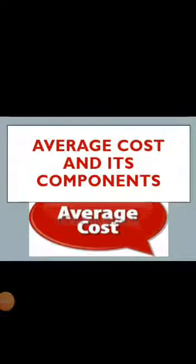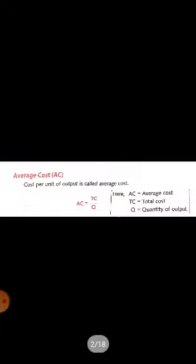Hello dear students, in the chapter on concept of cost, our next topic is average cost and its components. The first question is: what is average cost? Average cost is the per unit cost of output. The formula for average cost is AC = TC / Q, where AC is average cost, TC is total cost, and Q is quantity of output.